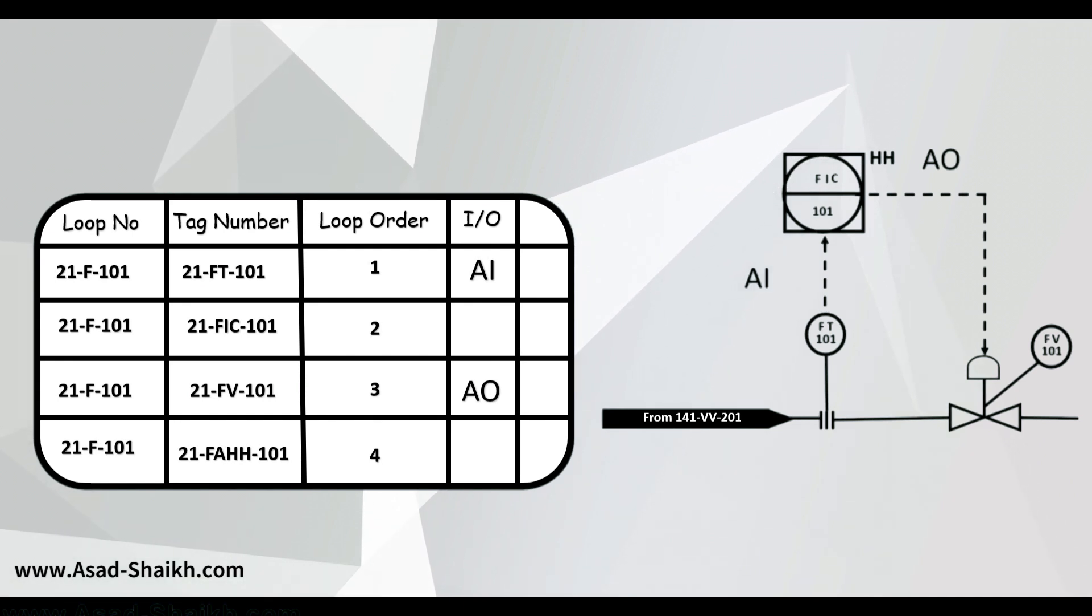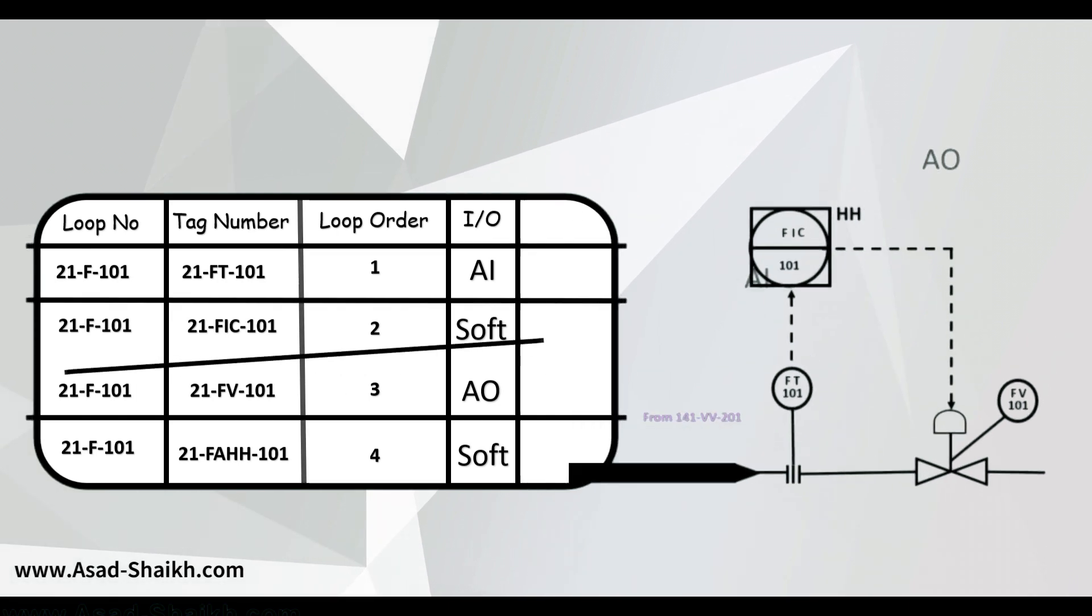But what about the FIC? FIC stands for flow indicating controller. So if you see here this is a soft signal. Why? Because neither is something coming inside the control system nor something is going outside. So if you see for example here this happens within the DCS itself which is going to indicate on the display. Hence it is a soft signal. The alarms are also being generated inside the DCS. Again they are soft signals. There is nothing entering or exiting the system. This is the basis to purchase your control system.